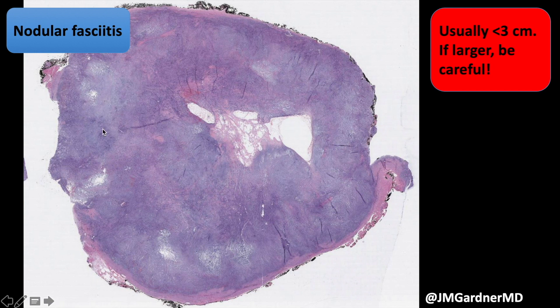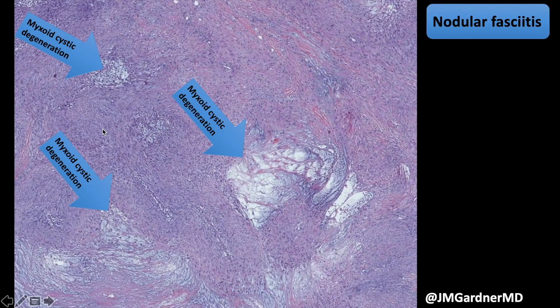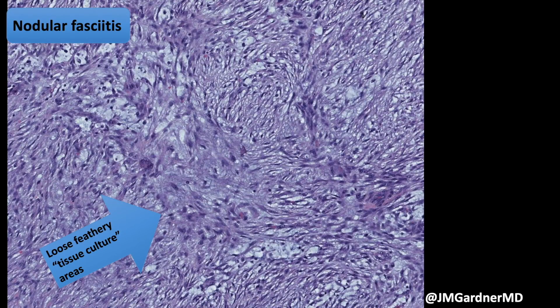Nodular fasciitis often has cystic myxoid degeneration — I find that an incredibly helpful clue that is usually present in most nodular fasciitis. Look for those little myxoid cysts where the lesion is breaking down. They also have this so-called tissue culture arrangement of myofibroblasts.